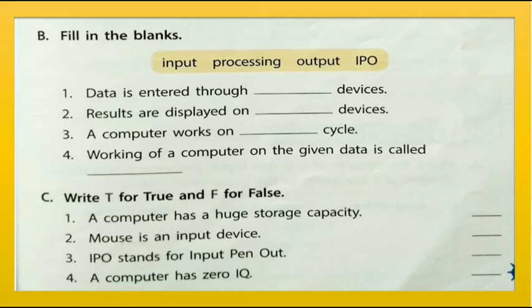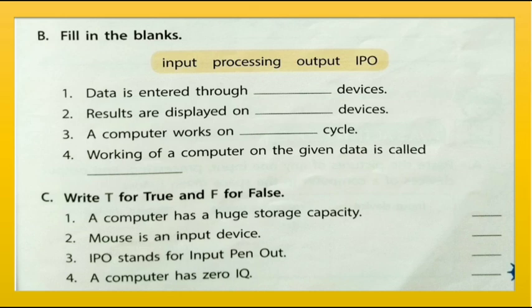Now true and false. A computer has a huge storage capacity — this is true. Mouse is an input device — this is also true. IPO stands for input, pen, output — this is false, because IPO stands for input, processing, and output. A computer has zero IQ — this is also true. Here we have completed our textbook exercise.